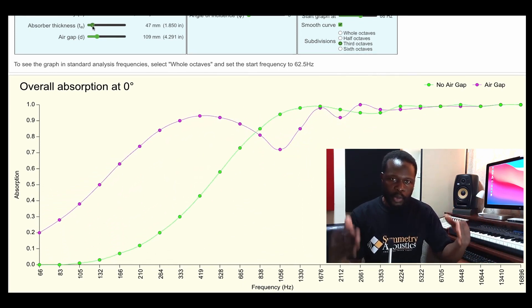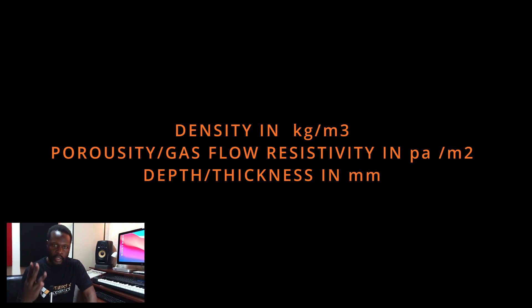Now let's talk about absorption materials in terms of optimization and why some absorb better than others. When designers or manufacturers are designing products, they take three parameters into account: density, porosity, and thickness. All these parameters need to work together in an optimized balance so that the panel absorbs a wide range of frequencies.